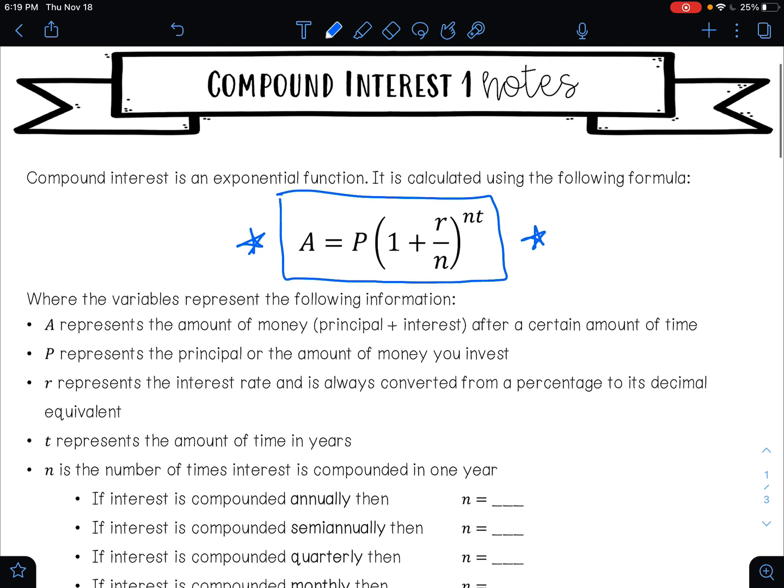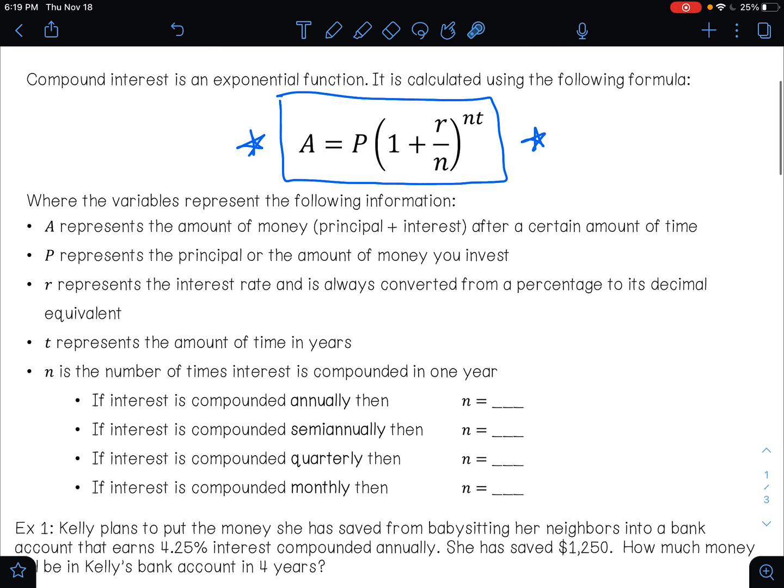So A, this letter right out here in front. Notice how A is capital and P is capital. In math and in science with formulas it's important to keep the capitalizations when they occur. So A is capital, P is capital, r, n, and t are all lowercase. The reason for that is because lowercase a's and lowercase p's can mean other things. So you need to be specific with what you're doing.